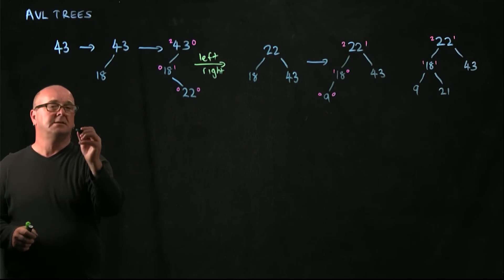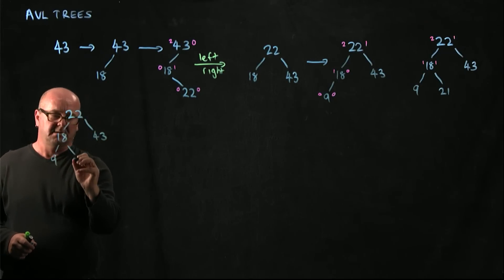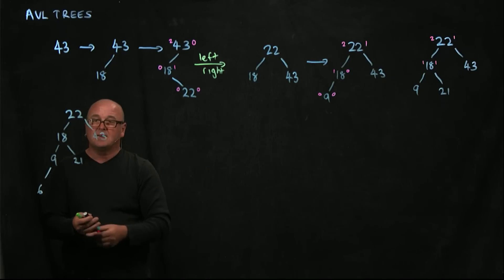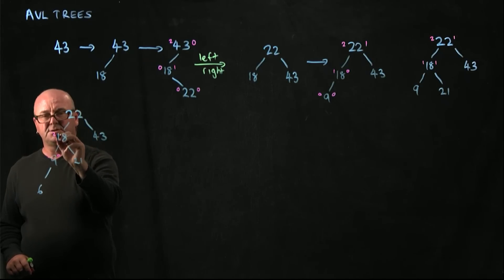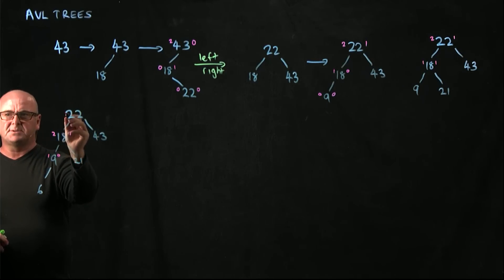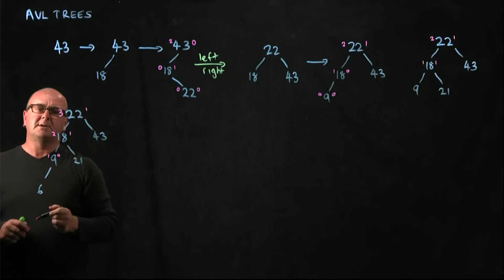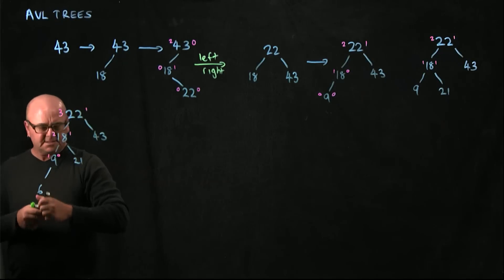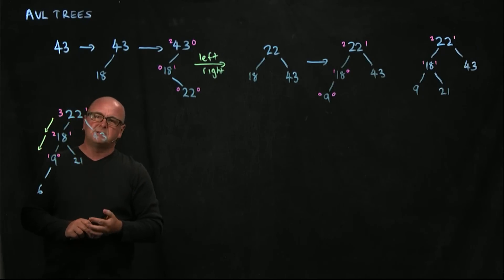Now we add a 6. Is this tree still balanced? Our 9 has 1 and 0. Our 18 has 2 and 1 — that's balanced. And our 22: the longest path from 22 to any leaf is height 3, while the height of the 43 side is 1. So now our tree is unbalanced. The imbalance occurs in the left child's left subtree, so we do a right rotation.